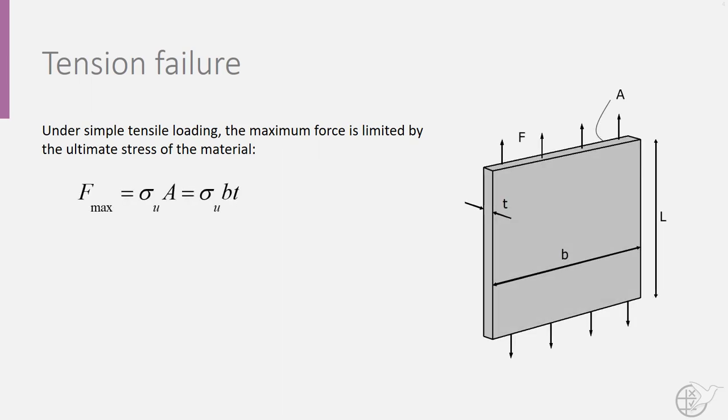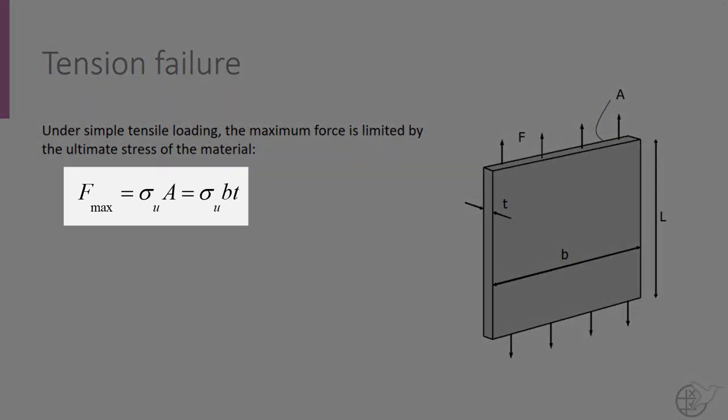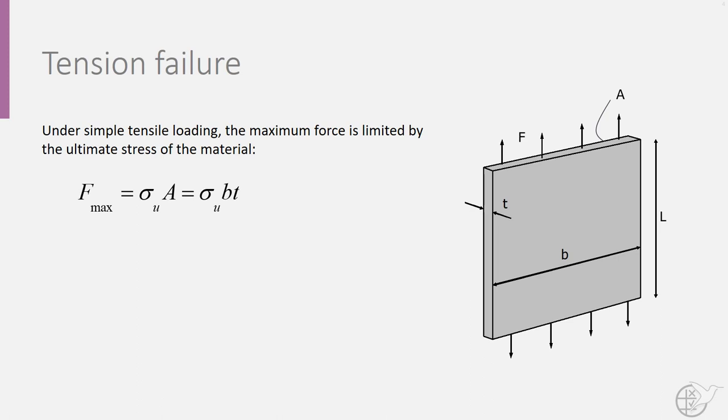For tension failure, fracture is limited by the ultimate stress of the material, so a flat plate of width b and thickness t will be able to carry a maximum force equal to the ultimate stress of the material multiplied by the cross-sectional area of the plate. We will call this a characteristic equation, which relates the structural capability to the material properties and geometry.